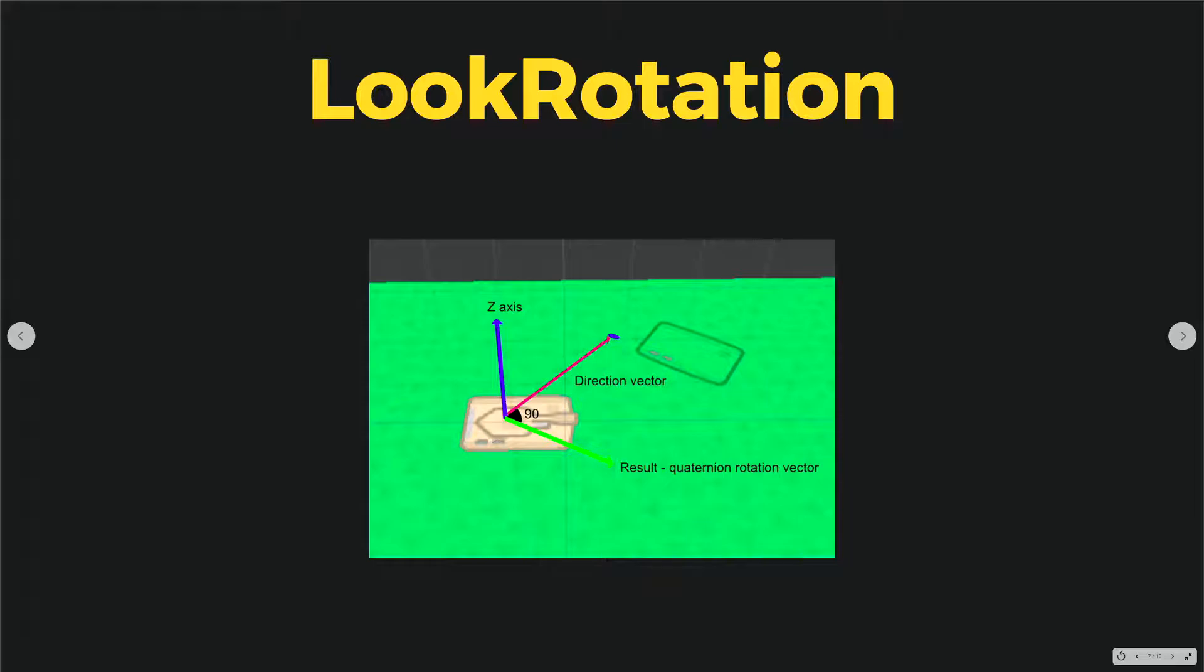Blue axis is the z-axis that we have passed as the first parameter. So the z-axis of our tank will align with the z-axis because we have passed it as the first parameter. The direction in which we want to look is marked with red arrow.